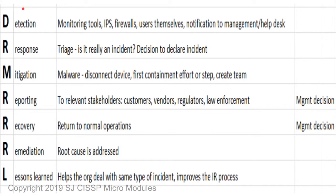The D is for detection. This is where a tool, such as an IDS or IPS, or even a user, reports that there's an issue, or something detects that there's an issue.